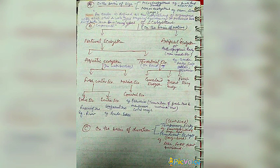The term ecosystem was coined by Tansley in 1935, and the father of ecology in India is Ramdeo Misra. On the basis of size, ecosystems are of two types: micro ecosystem, which is small in size — for example, a small pond or a flower pot — and macro ecosystem, which is large in size, for example, ocean and forest.